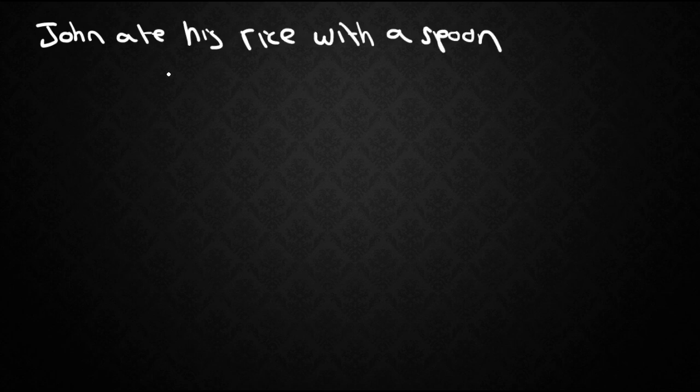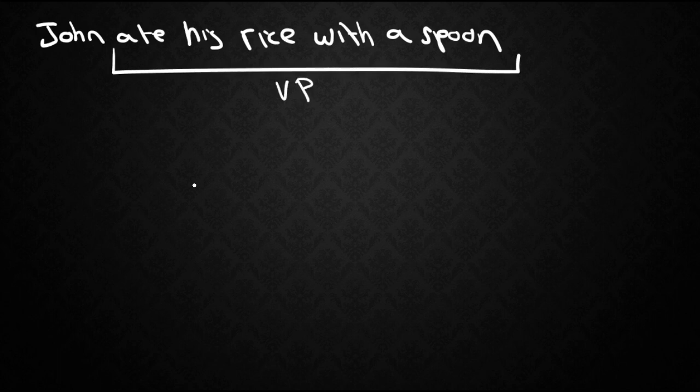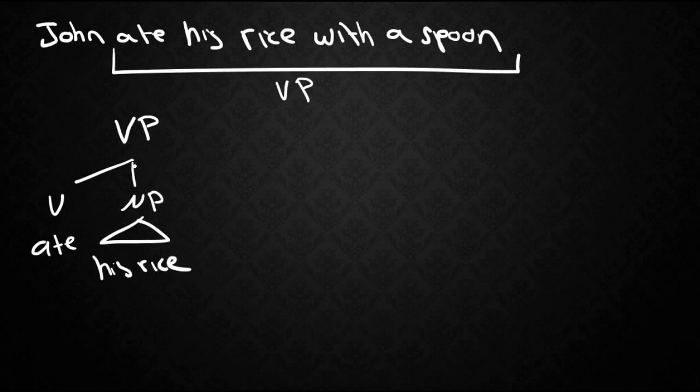So in a sentence like John ate his rice with a spoon we have here what we now know is a verb phrase. Now in the old model that we were using this was done like this. We had a verb which was ate, a noun phrase which was his rice, and a prepositional phrase with a spoon.